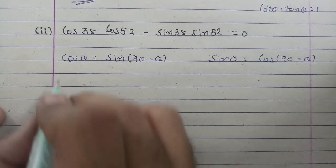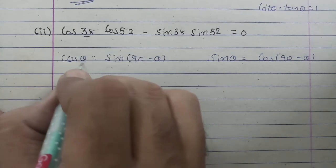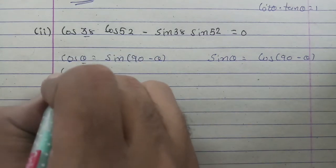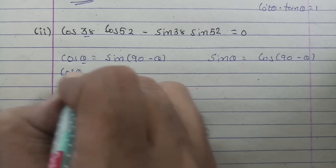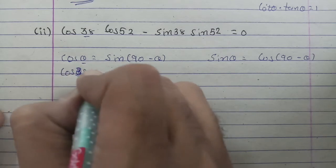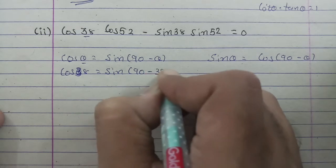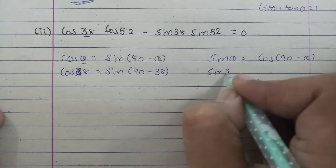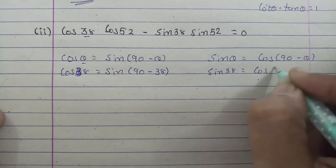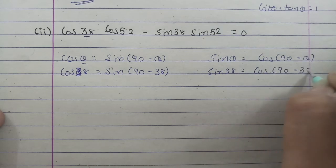Now first we will put 38 in place of theta. We will have cos 38° = sin(90° - 38°). Same thing, sin 38° = cos(90° - 38°).